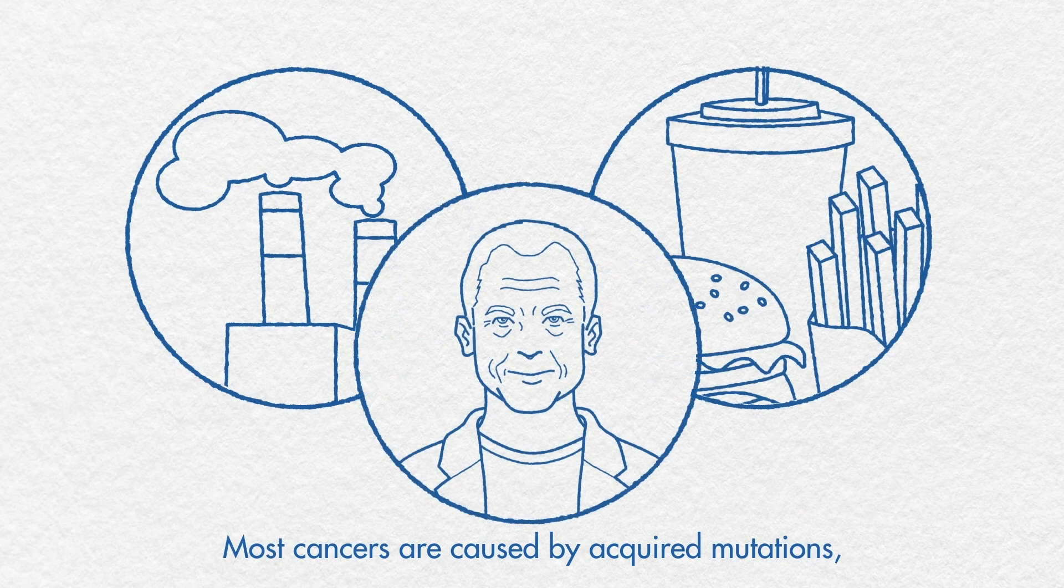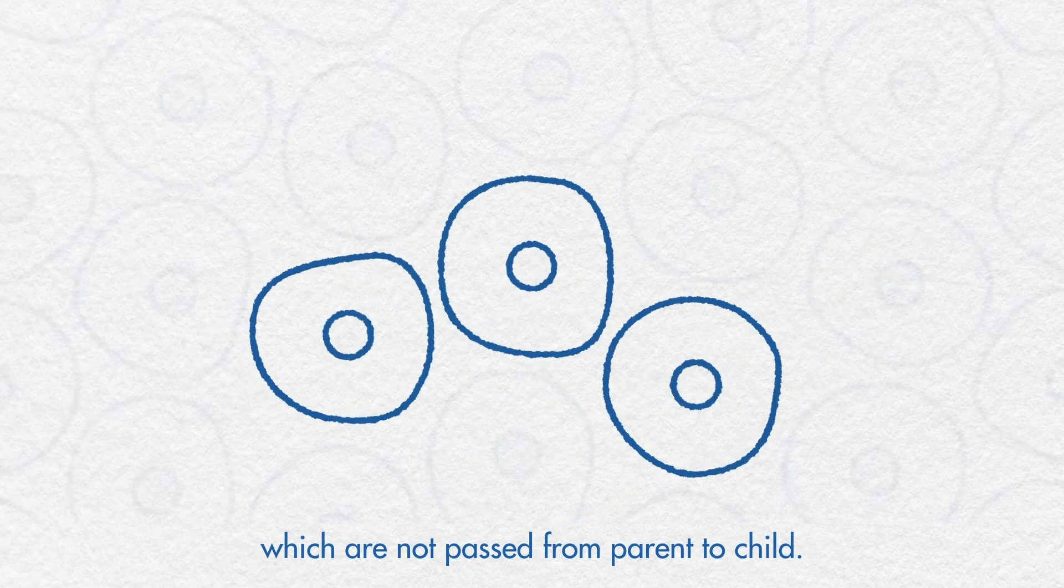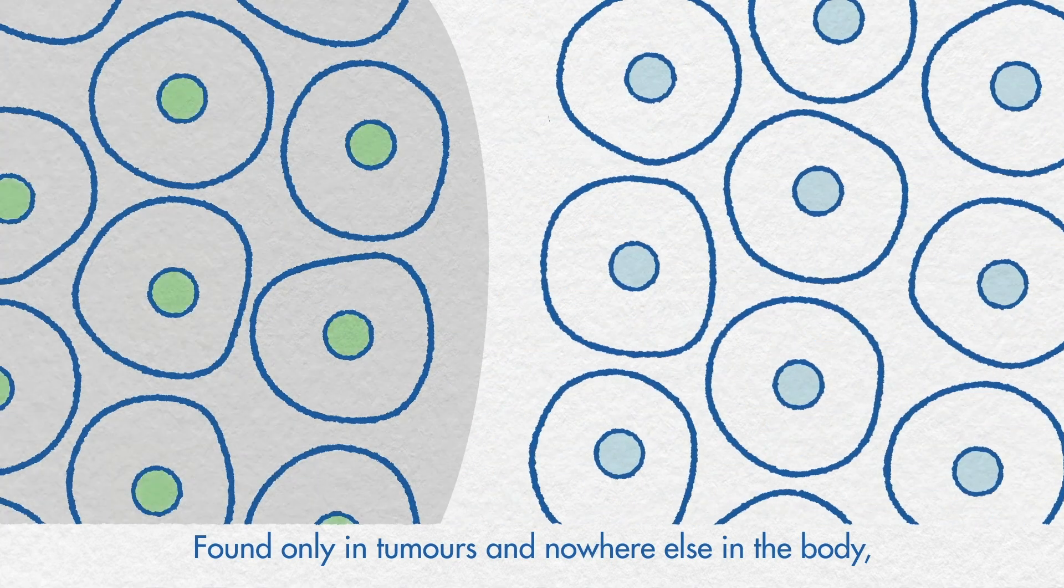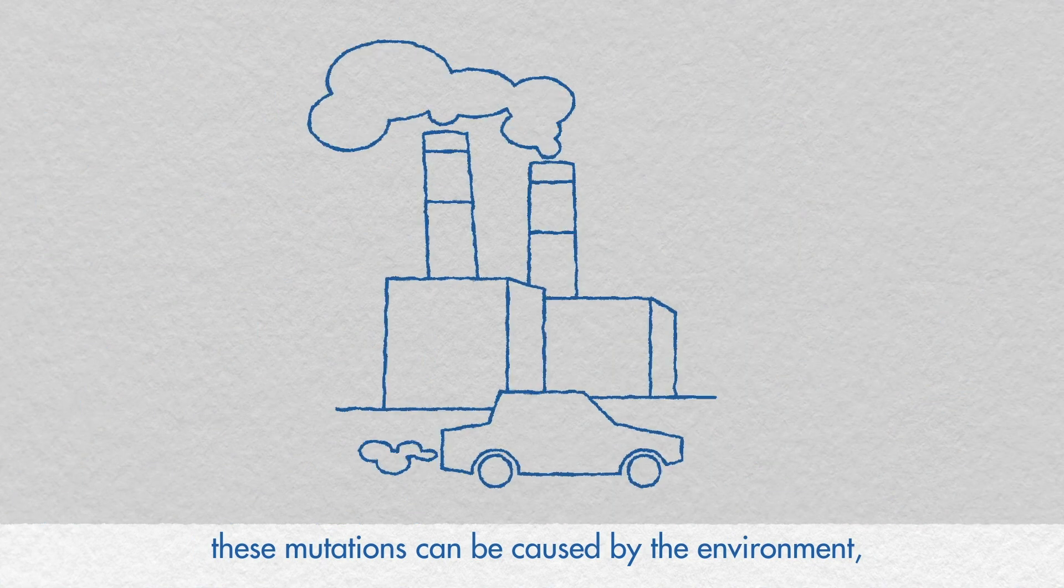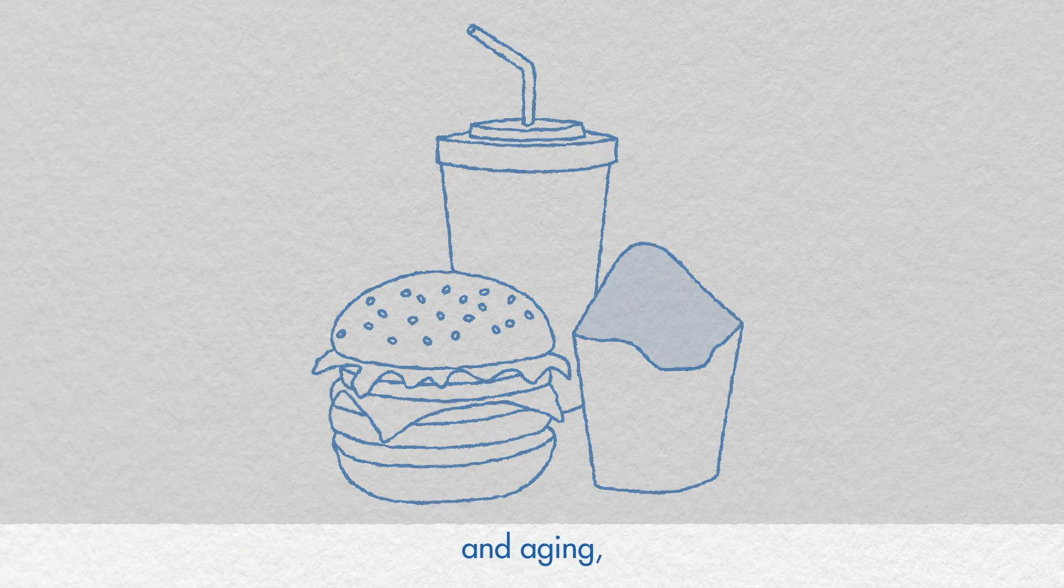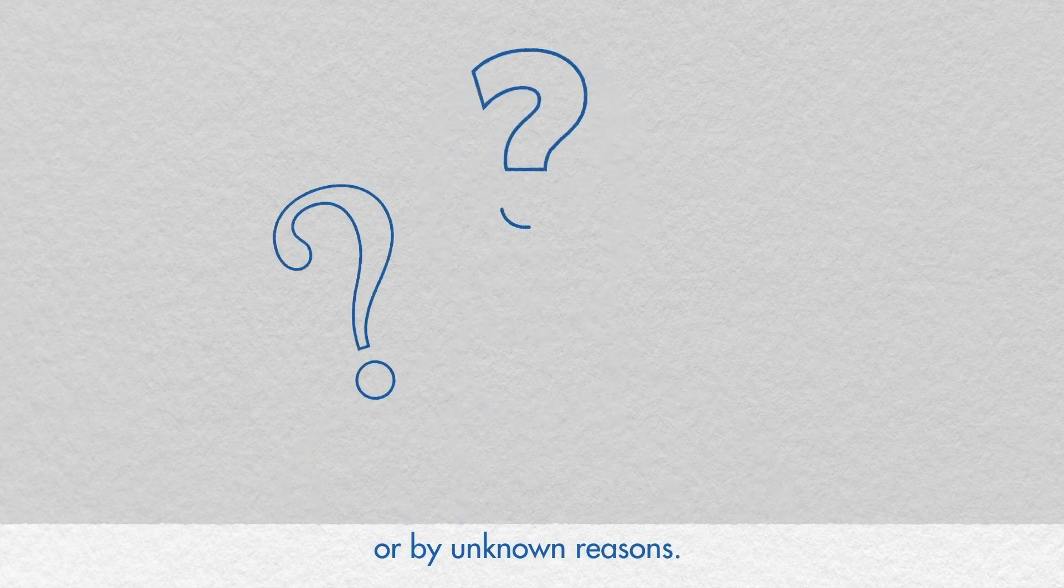Most cancers are caused by acquired mutations, which are not passed from parent to child. Found only in tumors and nowhere else in the body, these mutations can be caused by the environment, diet and aging or by unknown reasons.